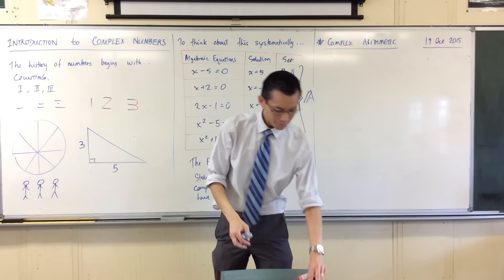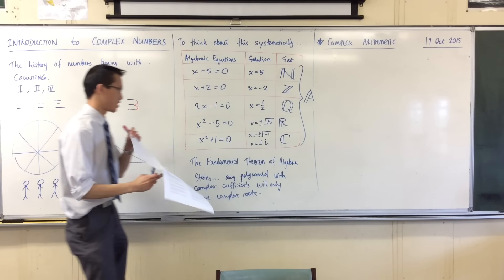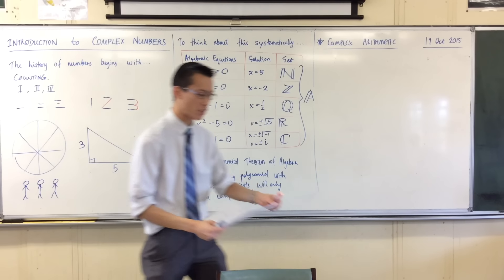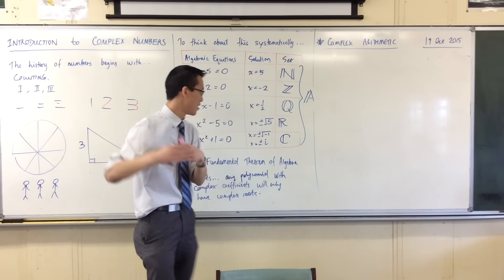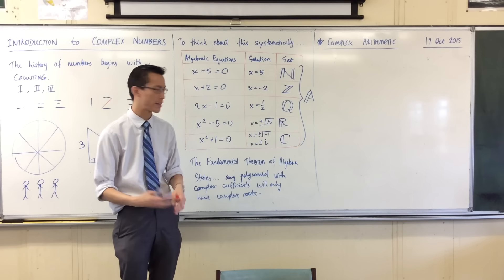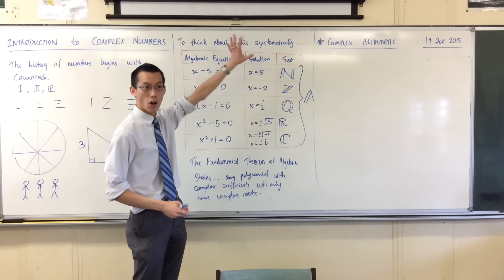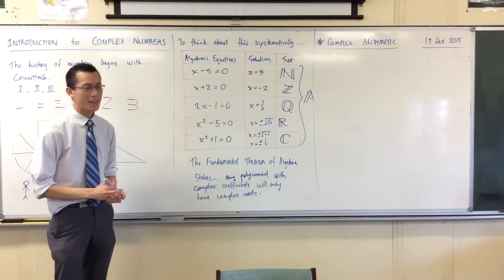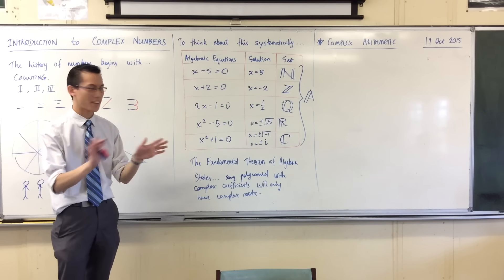As it turns out, complex numbers, despite how weird they sound, like you can't do operations, sorry, you can't do measurements on them, like how far is i centimeters? It doesn't quite work like that. We can do operations on them just like we can with any of the other numbers. With some interesting other conclusions.